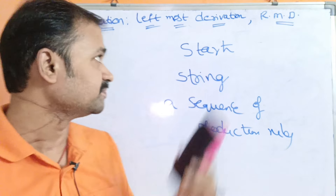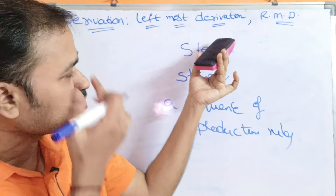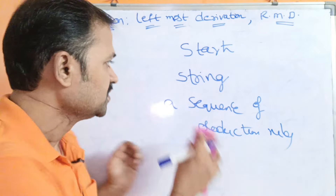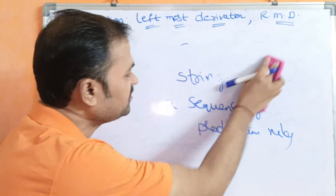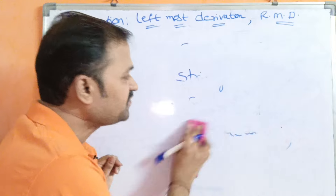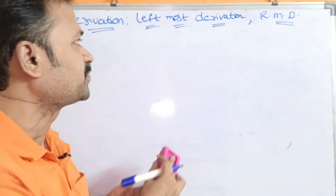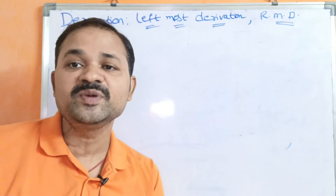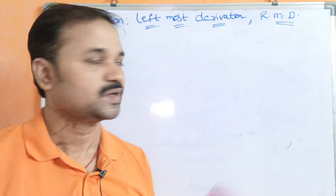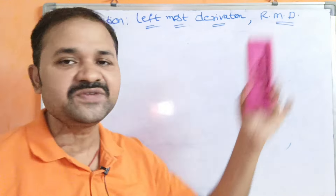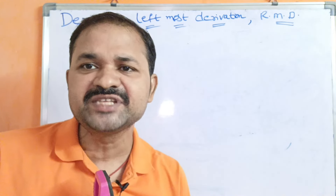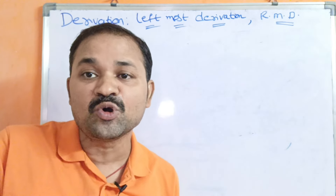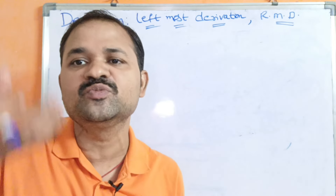We have two types of derivation. The first one is leftmost derivation and the second one is rightmost derivation. Leftmost derivation means in each step the leftmost non-terminal is to be expanded. Rightmost derivation means in each step the rightmost non-terminal is to be expanded.